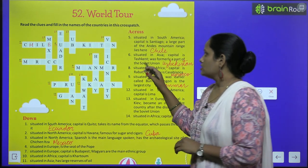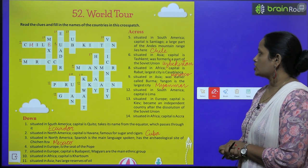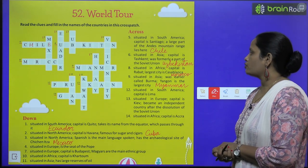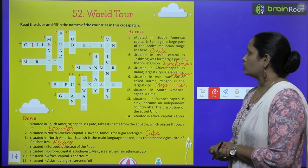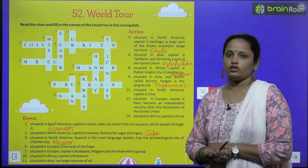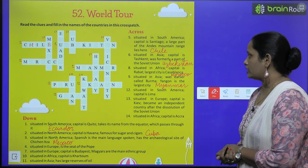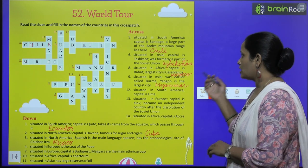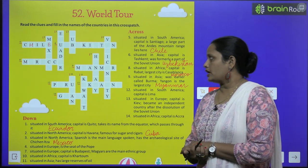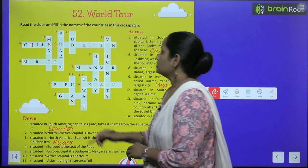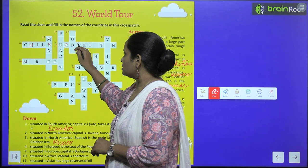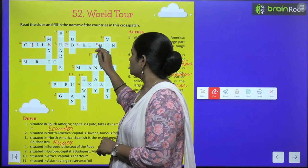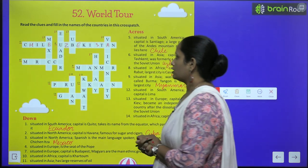Next, situated in Asia, capital is Tashkent, and it was formerly a part of the Soviet Union. Yeh Soviet Union ka ek part raha chuka hai aur yeh Asia mein situated hai. Its name is Uzbekistan. So let's write it here — Uzbekistan.